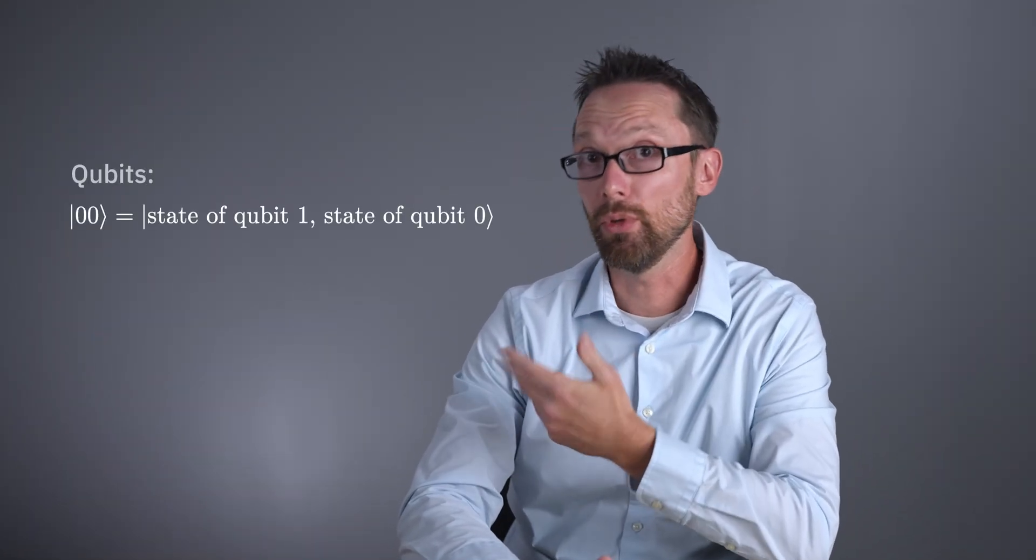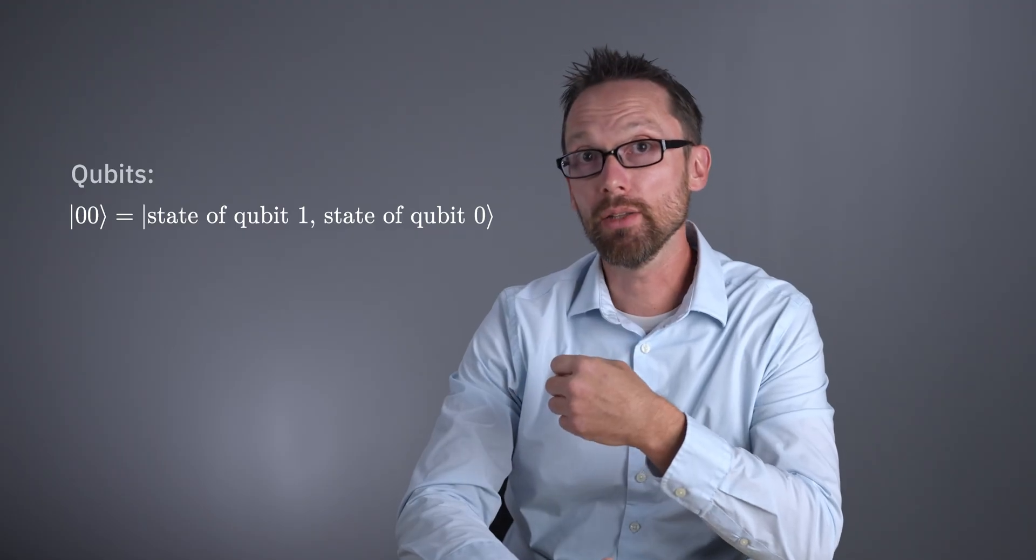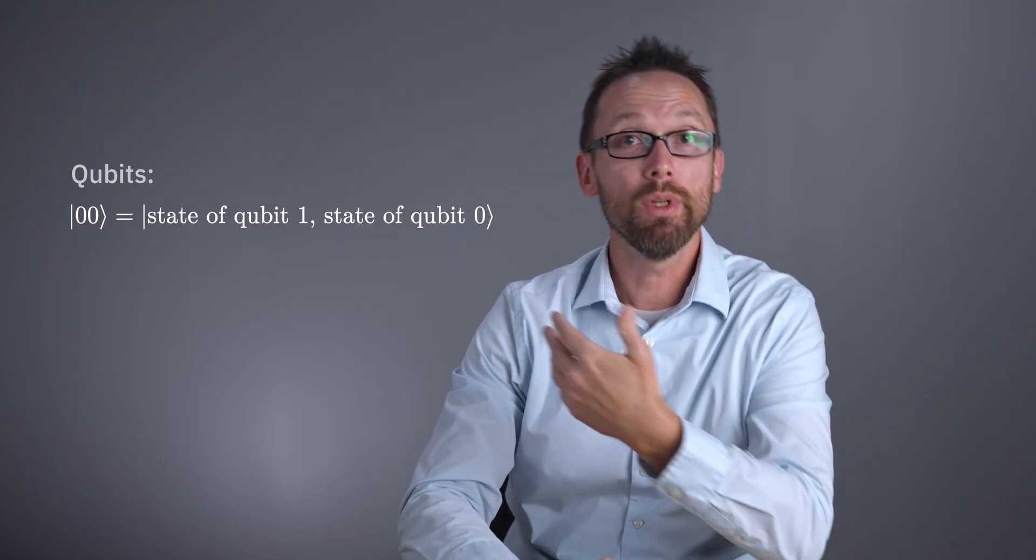Sometimes, two classical bits will be in the same state, like 00. This can also be true for two qubits. Sometimes you might see this written as 00 using this ket symbol, where the rightmost 0 tells us the state of qubit 0, and the one to the left tells us about the state of qubit 1.